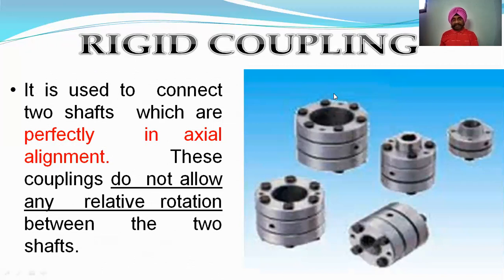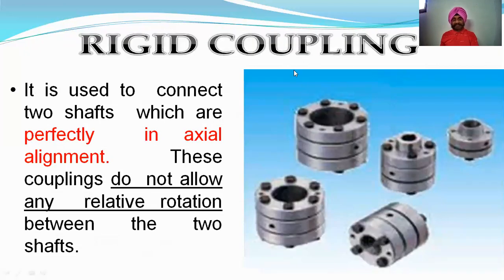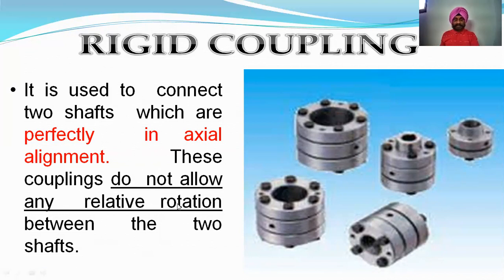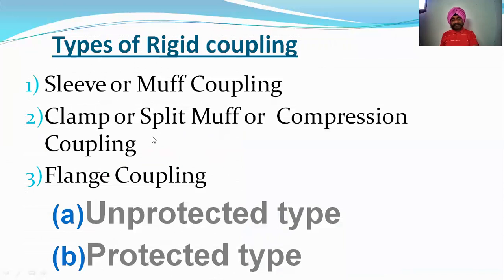There are two broad categories of coupling: rigid coupling and flexible coupling. Flexible coupling will be done in the next lecture. For now, we will study rigid coupling. Rigid coupling is used to connect two shafts which are perfectly in axial alignment. These couplings do not allow any relative motion between the two shafts — no angular misalignment or lateral eccentricity is possible.